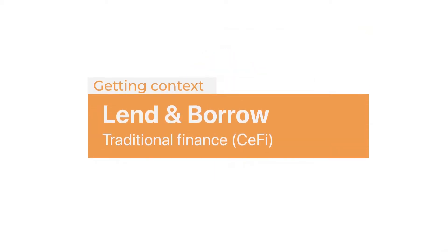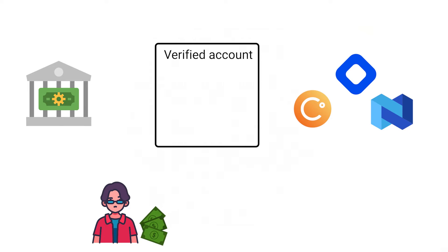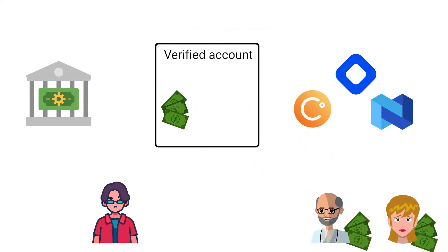To gain some context, let's begin by looking at how lending and borrowing works in traditional finance. In CeFi, we use banks or crypto apps such as BlockFi, Celsius, and Nexo. We need to open a verified account and deposit fiat or cryptocurrencies into these accounts. The services will pool all deposits and lend them out to other users or institutions for interest, and a portion of the interest generated is paid to the depositors.